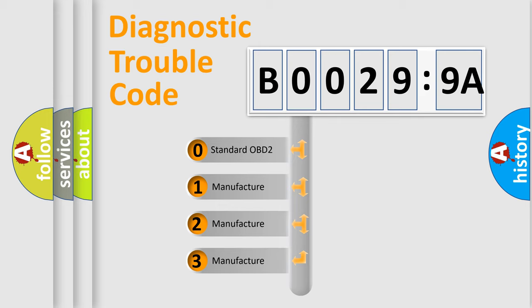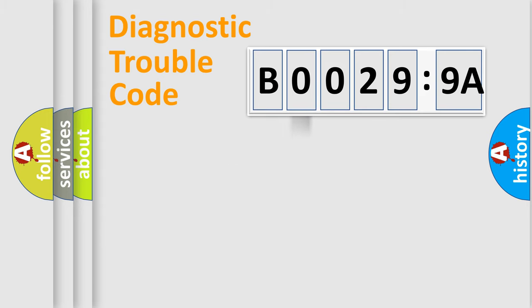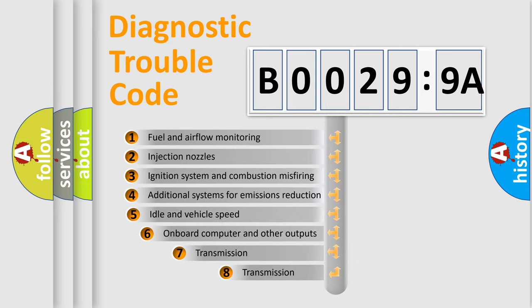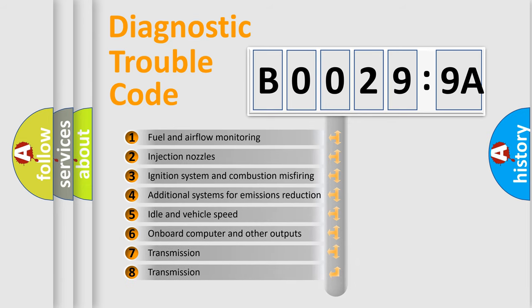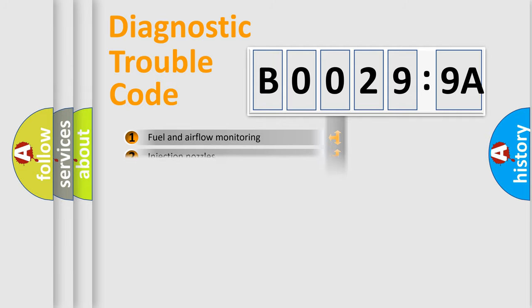If the second character is expressed as zero, it is a standardized error. In the case of numbers 1, 2, or 3, it is a manufacturer-specific expression of the car-specific error. The third character specifies a subset of errors. The distribution shown is valid only for the standardized DTC code.